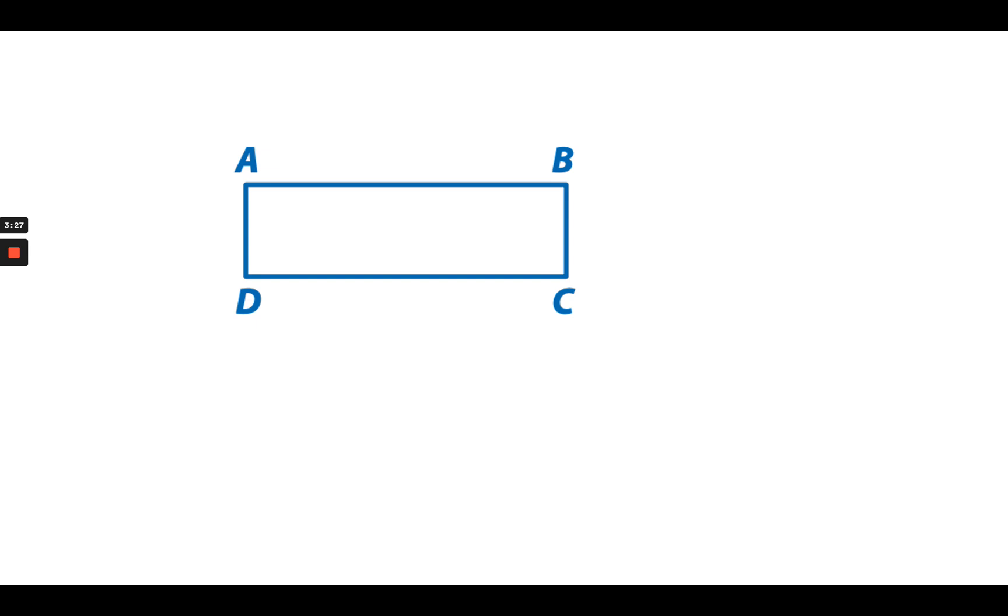Now we're going to take a look at an example of some different ways that you could describe a geometric figure using these vocabulary words. So here I see a rectangle labeled with A, B, C, and D. One way that I can describe this figure is that it includes four line segments: line segment AB, BC, CD, and AD.